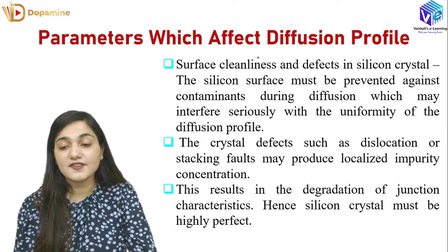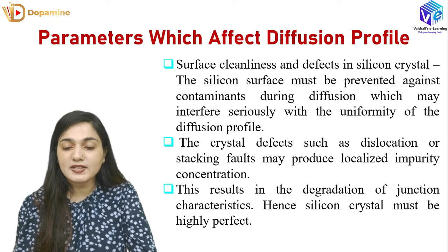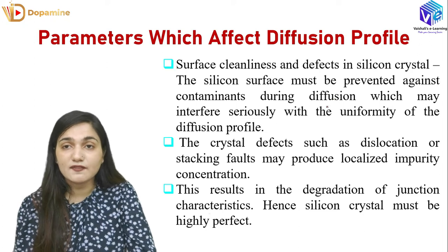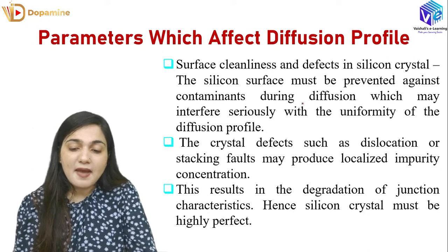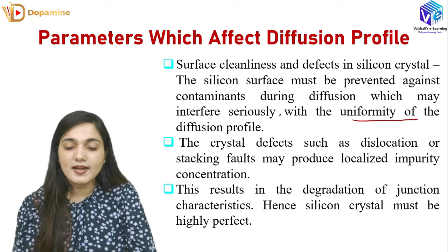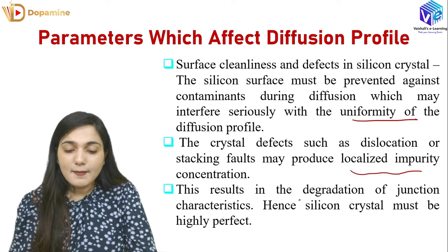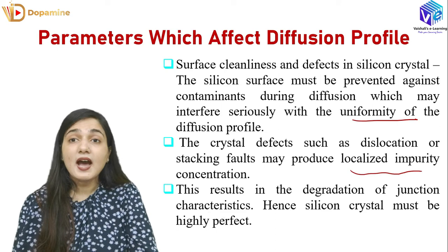If the surface is not clean and there are defects on the surface, they will affect the diffusion profile. The silicon surface must be protected against contamination during diffusion. If contaminants are present in the diffusion profile, there will be uniformity issues. Crystal defects such as dislocations and stacking faults can also be produced by localized impurity concentration, leading to degradation of junction characteristics.